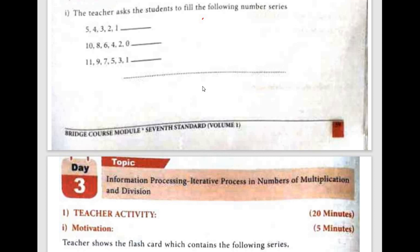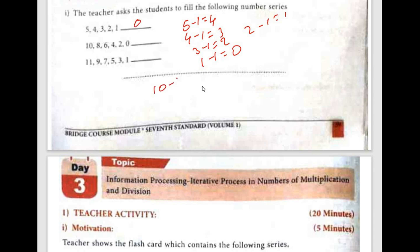The teacher asks the students to fill the following number series: 5, 4, 3, 2, 1. So in this series, 5 minus 1 is 4, 4 minus 1 is 3, 3 minus 1 is 2, 2 minus 1 is 1, and 1 minus 1 is 0. Next: 10 minus 2 is 8, 8 minus 2 is 6, 6 minus 2 is 4, 4 minus 2 is 2.